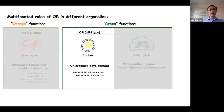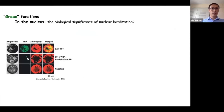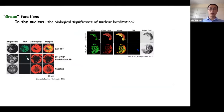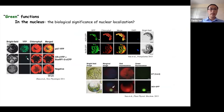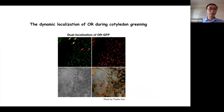Recently, we find the nuclear localization of OR and its function in chloroplast development. The nuclear localization of OR has been discovered for years, including cauliflower OR and sweet potato OR. However, the biological significance of the nuclear localization of this orange protein was still unknown until recently.